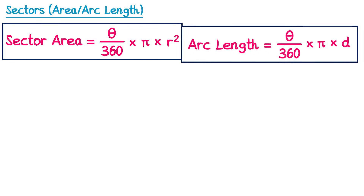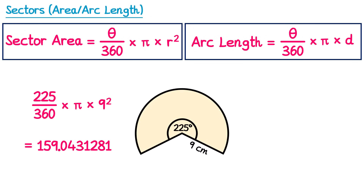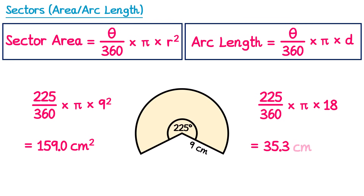Let's practice using both of these formulas for another sector. We're going to calculate both the area and the arc length. For the sector area, the angle is 225 and the radius is 9, so we replace theta with 225 and r with 9. For the arc length, the angle is again 225, but the diameter is double 9, so 18. Typing this into your calculator gives 35.3 centimetres for the arc length.